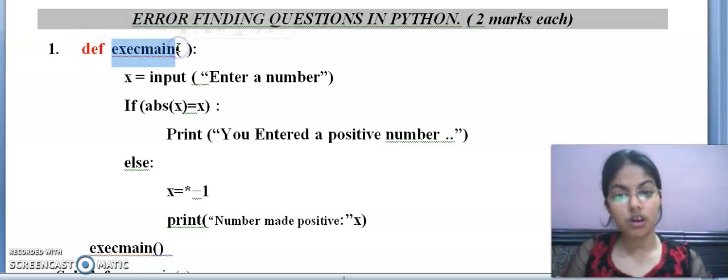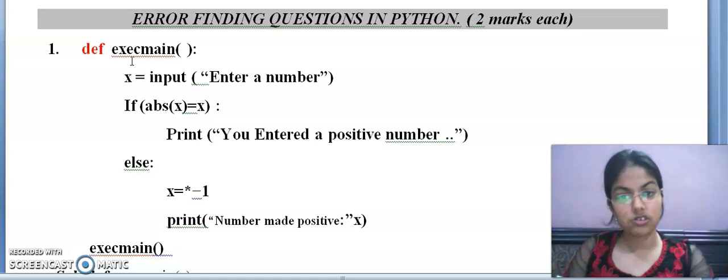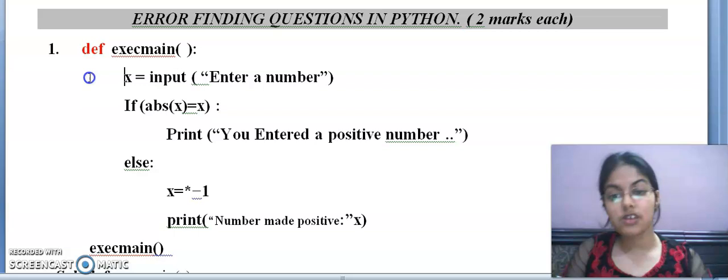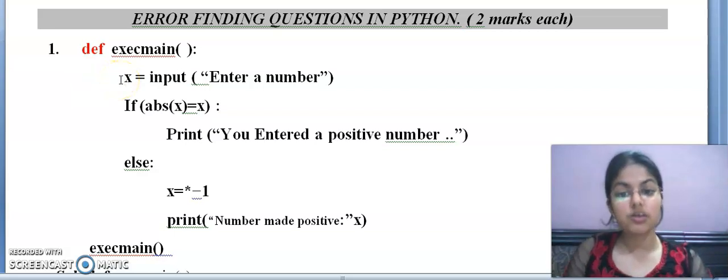This is the name of a function. In function names, you have to follow all the rules that you use for variable names. For example, function name cannot have spaces in between. Special characters are not allowed except underscore. It can contain a digit but cannot start with a digit. Function name cannot be a keyword also. After the function name, these brackets come. This colon is also given, which is correct.